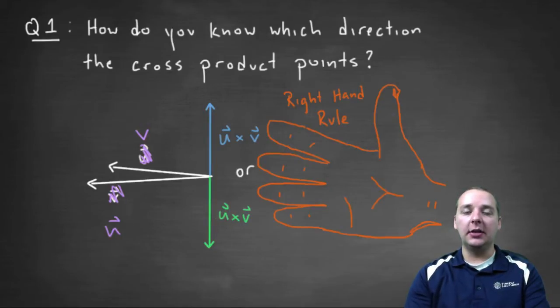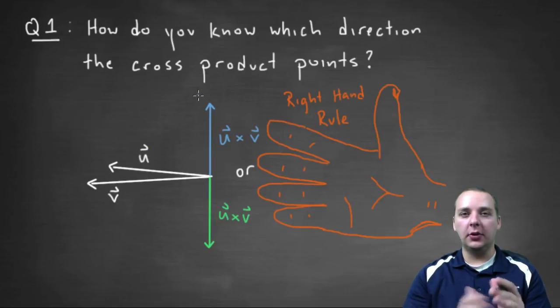So anyways, that's a good quick indicator of determining what direction the cross product is going to point.